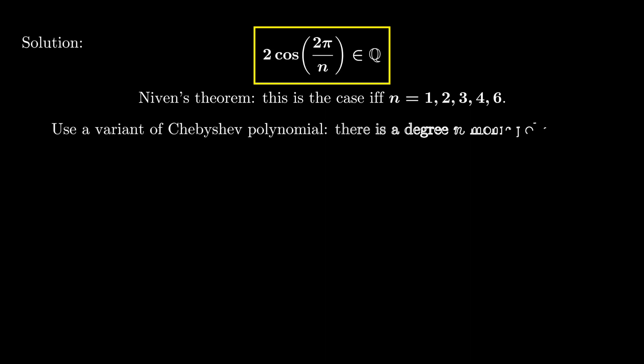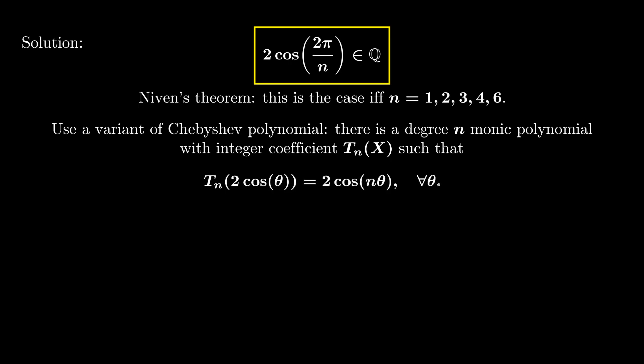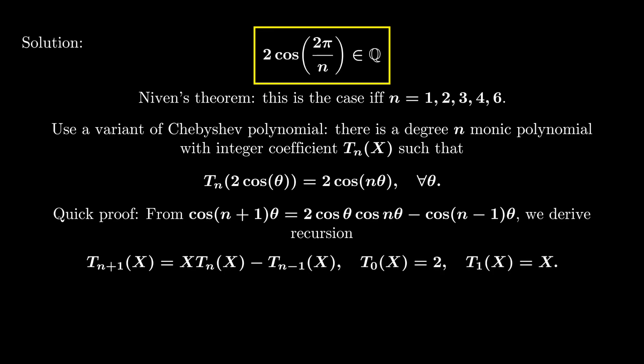The proof of the theorem is based on the property of Chebyshev polynomial. We first saw the existence of a degree n monic polynomial Tₙ with integer coefficients such that Tₙ(2 cos θ) = 2 cos(nθ) for any θ. This is due to the following trigonometric identity, which allows us to write down a recursion on Tₙ. More explicitly, we get T_{n+1} = x Tₙ - T_{n-1}. Then we could easily prove by induction that Tₙ satisfies the condition, and it is monic degree n and has integer coefficients.